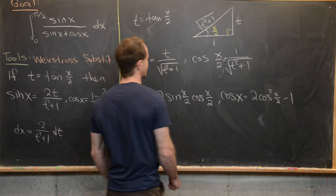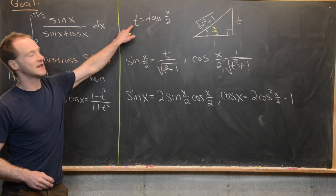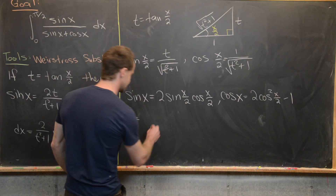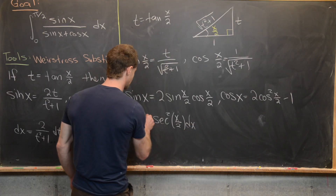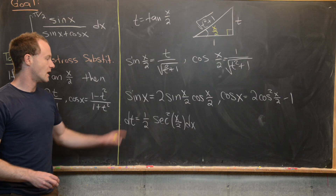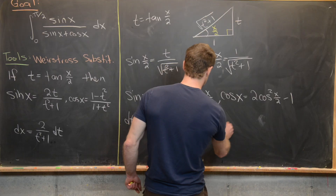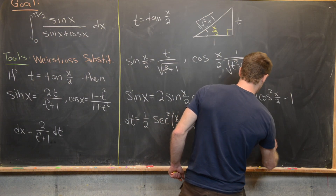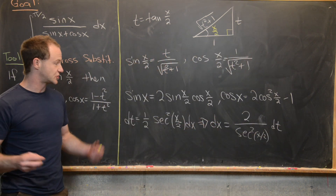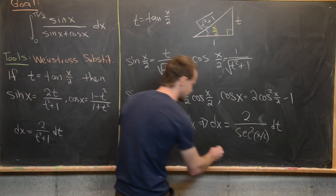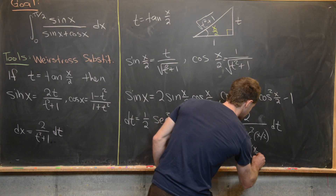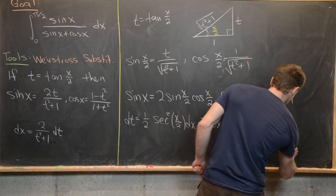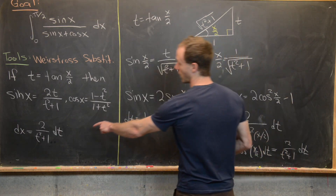Now we work towards the differential dx. Differentiating t equals tan(x/2) gives dt equals secant squared of x over 2 times one half dx, by the chain rule. So dx equals 2 over secant squared of x over 2 dt, which equals 2 cosine squared of x over 2 dt. Substituting our known value of cosine of x over 2, this gives dx equals 2 over t squared plus 1 dt, exactly as needed.